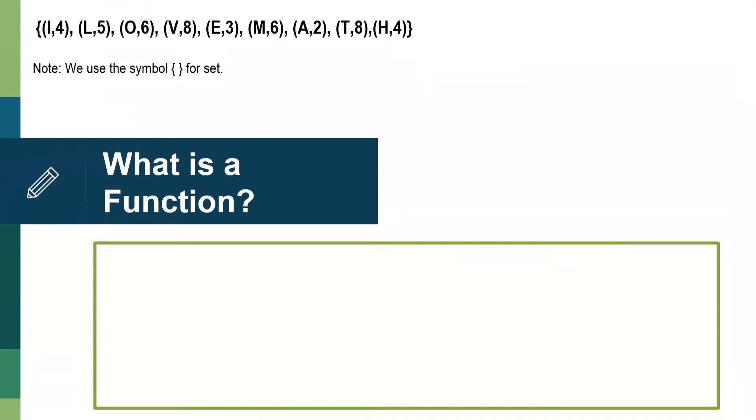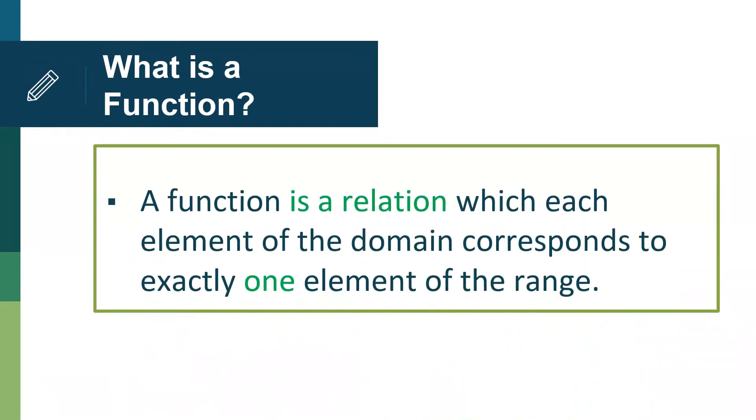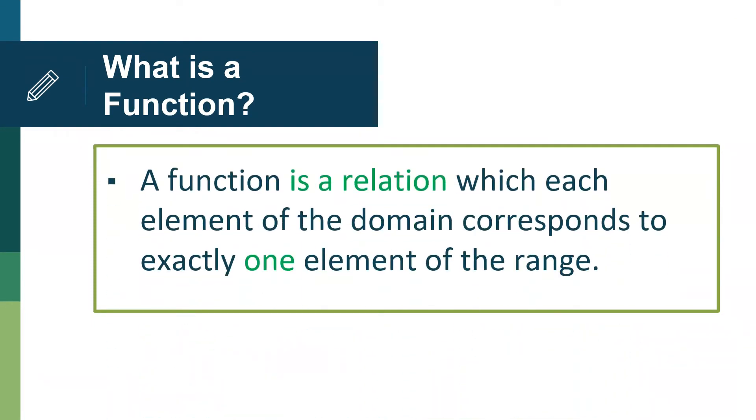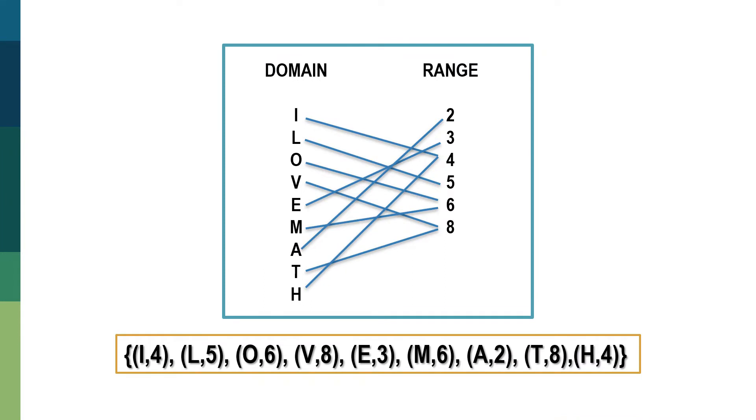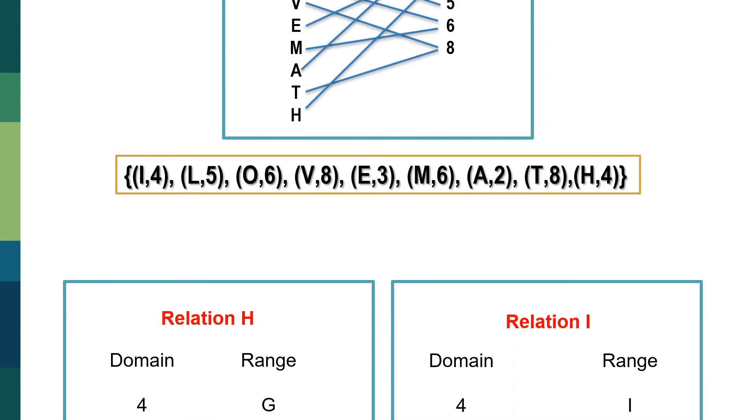Now let us define what is a function. A function is a relation in which each element of the domain corresponds to exactly one element of the range. That rule or that definition is also applicable to our example earlier. So it indicates a one-to-one relationship from the domain and going to the range.